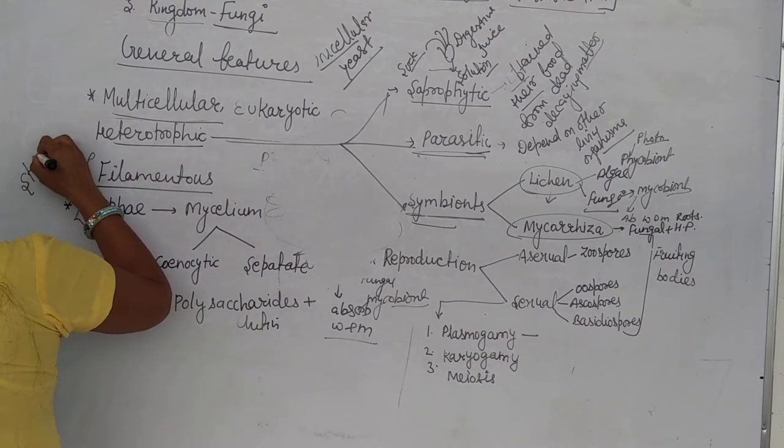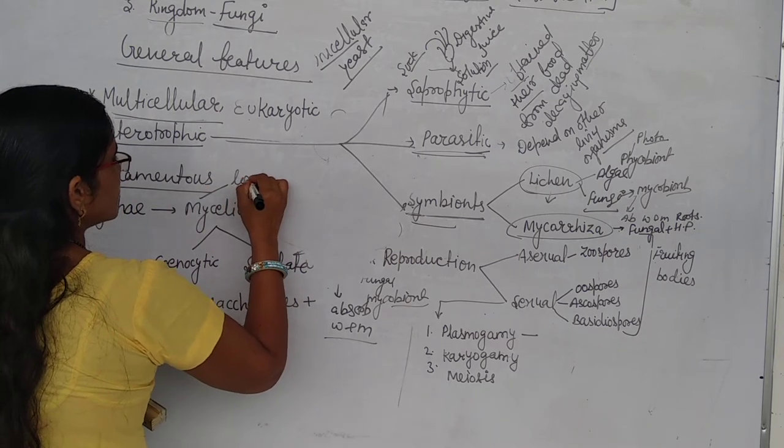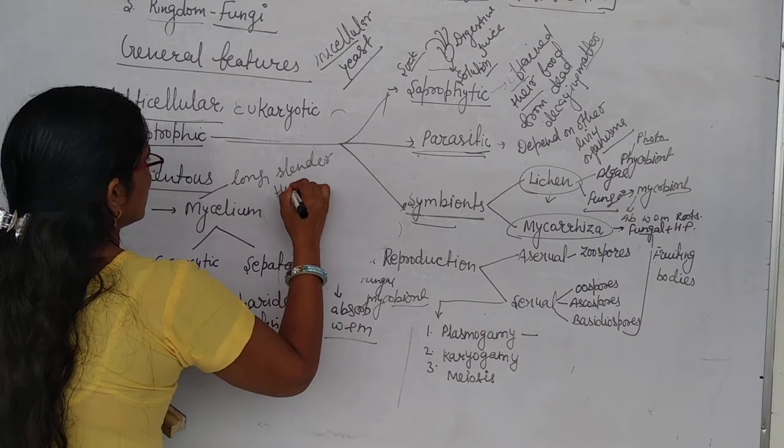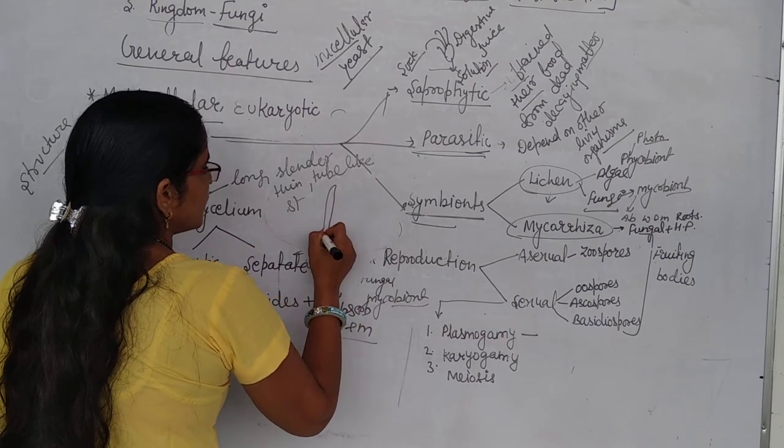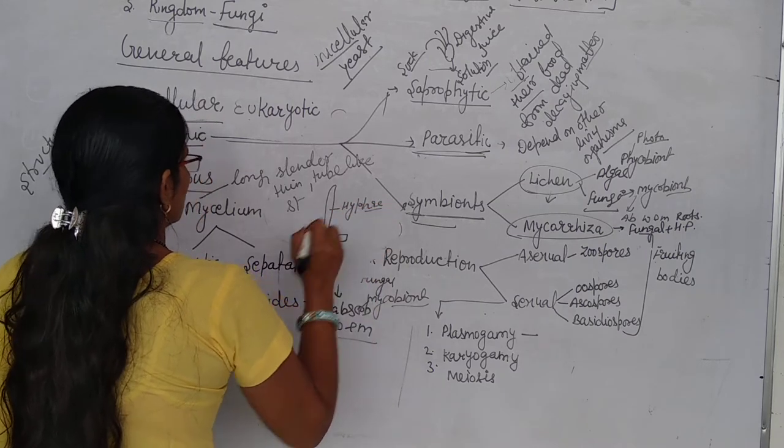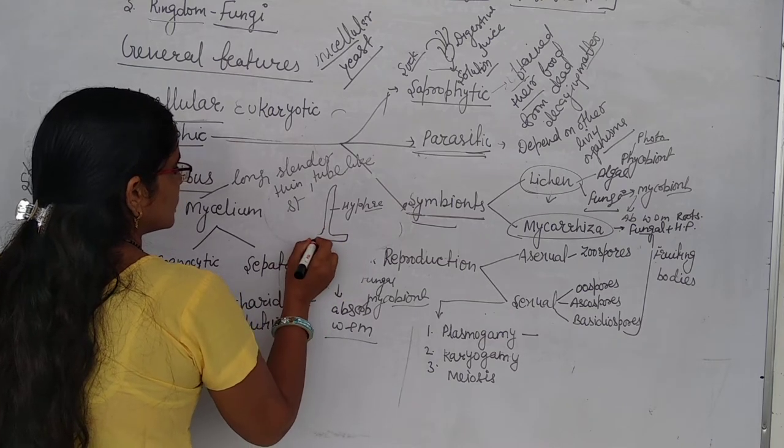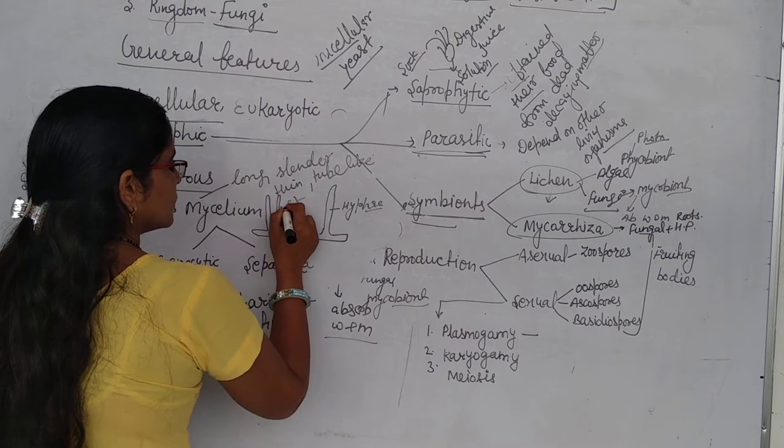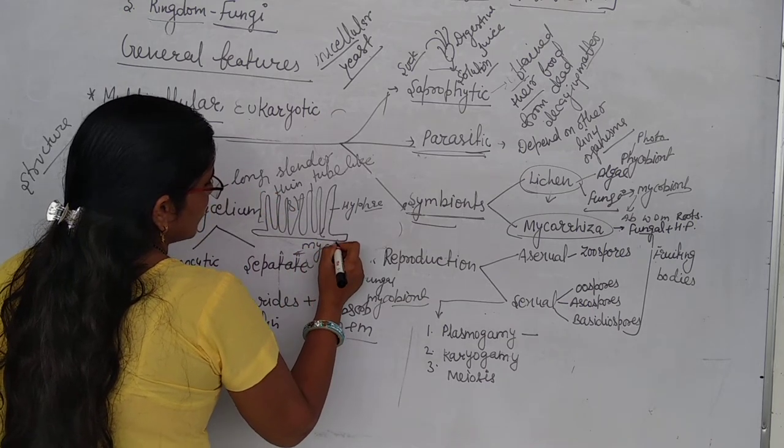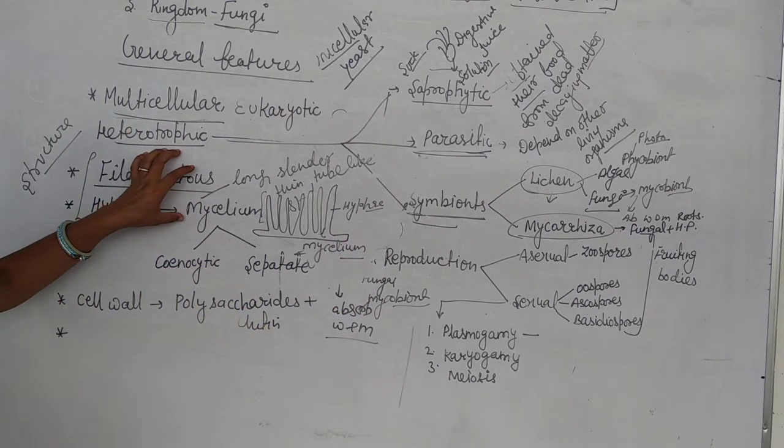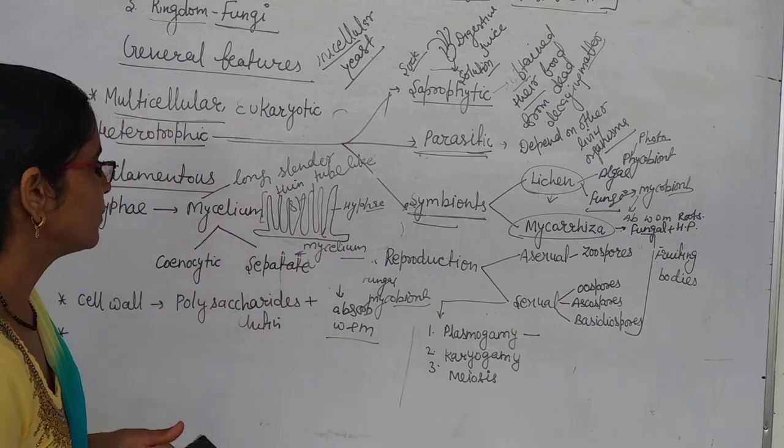Now we go to the structure. How is the structure? There are filaments - long, cylindrical, thin, tube-like structures. One single structure is known as hypha. When this network of hyphae forms, that is known as mycelium. I hope you don't have a problem with structure. Filamentous, long, cylindrical, thin, tube-like structure - if it is single, that is known as hypha. If it is a network of hyphae, then that is known as mycelium.